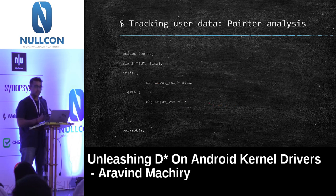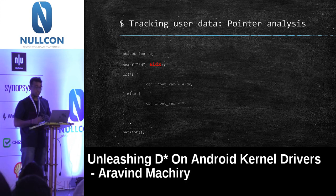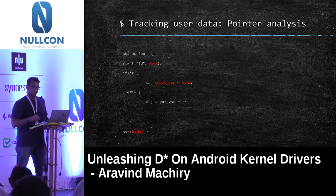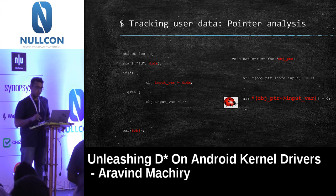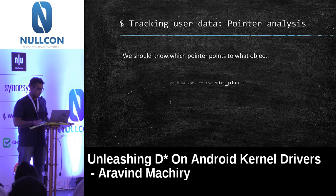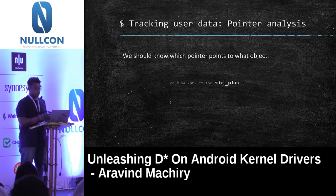However, there are problems in tracking user data. The first problem is pointer analysis. Consider a simple code where we read user input into variable IDX, assign the address of IDX to a member of structure OBJ called input_bar, and pass that object to function bar. In bar, it uses input_bar to dereference into an array — there's an obvious array out-of-bounds access. To track this, we need to know which pointer points to which object.